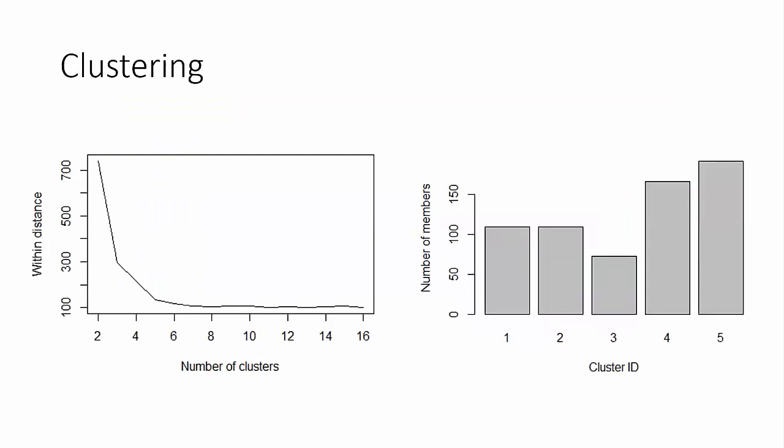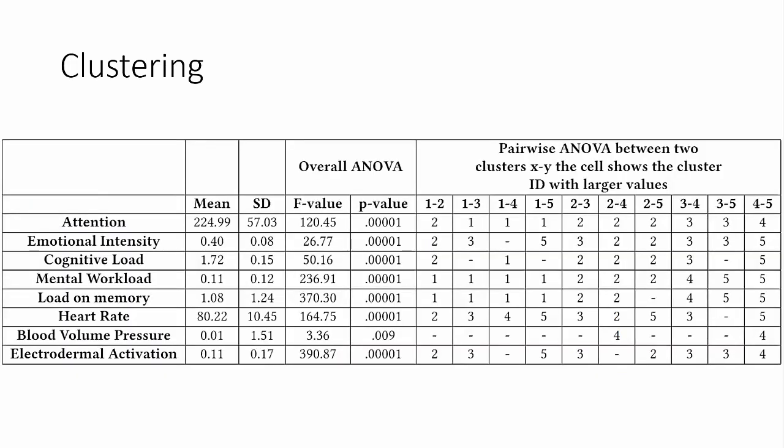Then we used a k-means clustering algorithm to cluster based on these nine measurements for each question. And we used the famous elbow method to find the perfect number of clusters, which turns out to be five here. And we were minimizing the within cluster distance. And on the right hand side, you can see that the number of members in each cluster are more or less comparable.